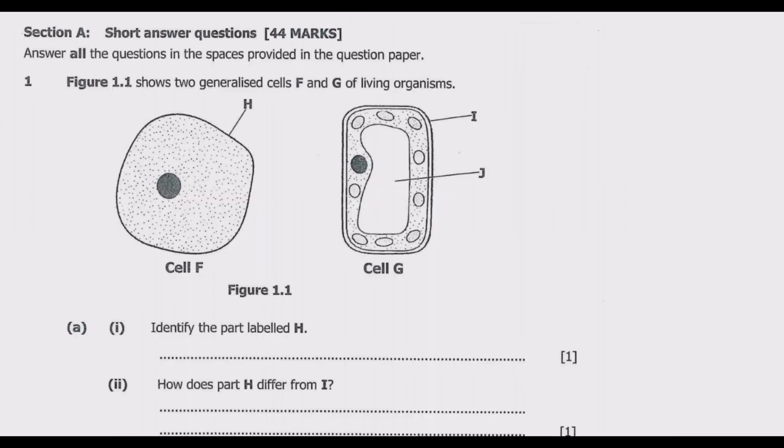Let us look at question 1 from section A, which carries 24 marks. Question 1, figure 1.1 shows two generalized cells F and G of living organisms. So we have two cells, cell F and cell G. Then question A part i: identify the part labeled H. Part ii: how does part H differ from I?